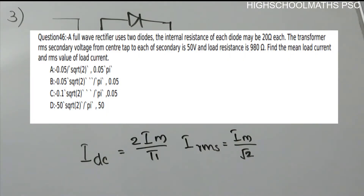Third question: a full-wave rectifier uses two diodes. The internal resistance of each diode is 20 ohm each. The transformer RMS secondary voltage from center tap to each end of secondary is 50 volt, and load resistance is 980 ohm. Find the mean load current (IDC) and RMS value of load current (IRMS). Options: A) 0.05/√2, 0.05π; B) 0.05√2/π, 0.05; C) 0.1√2/π, 0.05; D) 50√2/π, 50.